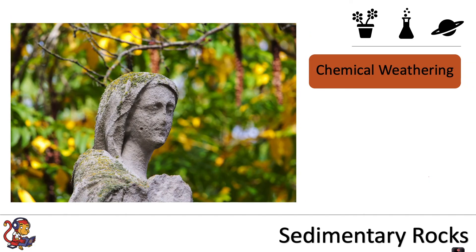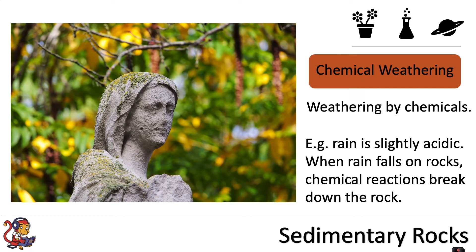Chemical weathering is another type of weathering, and this is weathering by chemicals. Rain is slightly acidic, and when rain falls on rocks, chemical reactions break down the rock. For example, this statue here has gradually over time been broken down by rain — because that's slightly acidic — or even further by acid rain.